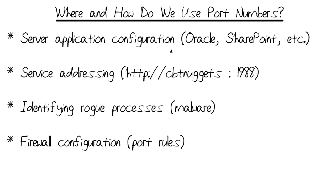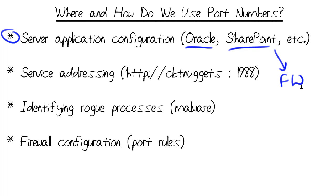So practically speaking, where and how do we use port numbers? One thing is during server application configuration. Enterprise applications like Oracle, SQL Server, and SharePoint all require you to set up services on discrete port numbers, and that brings in the notion of the firewall and working with your network administrator to allow for that traffic to flow on those port IDs.